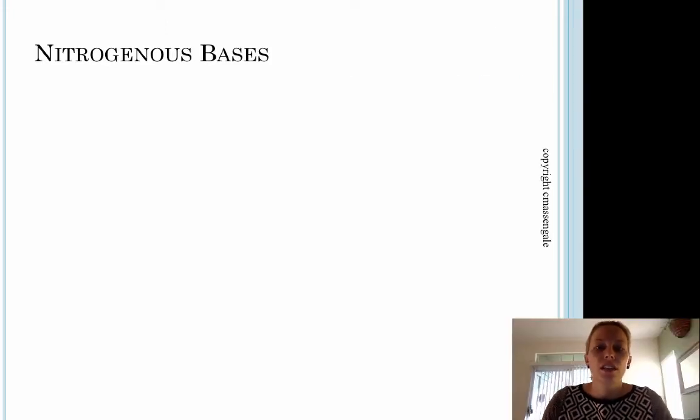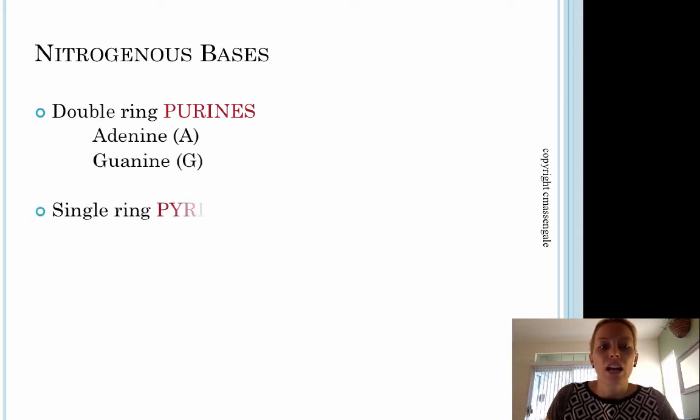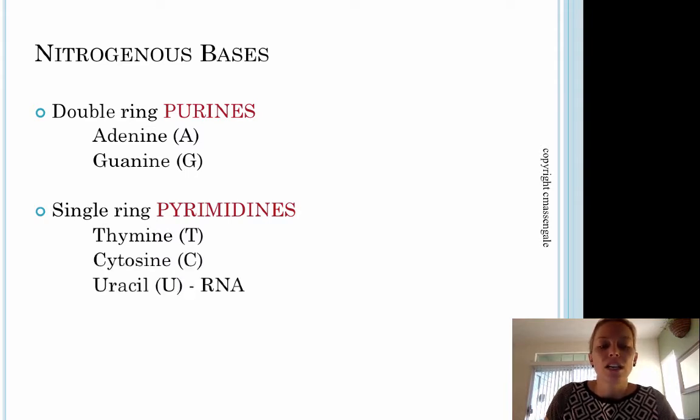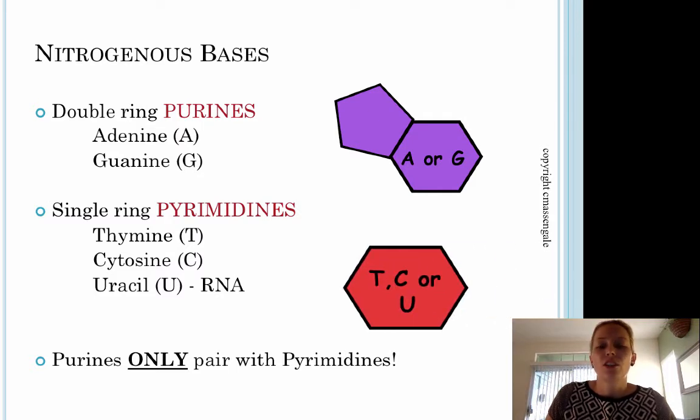Let's take a closer look at the nitrogenous bases of DNA. The purines are double ring structures: adenine and guanine. The other bases are single ring pyrimidines: thiamine, cytosine, and uracil if we're talking about RNA. Purines only pair with pyrimidines. To remember that, purine has two syllables, so I think of purine as two rings. The single ring is your pyrimidine.